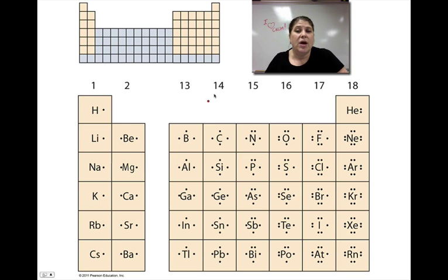This shows the dot structures of a whole bunch of different elements. All the ones in group 1 have one valence electron. In group 2, two valence electrons, etc., all the way across.